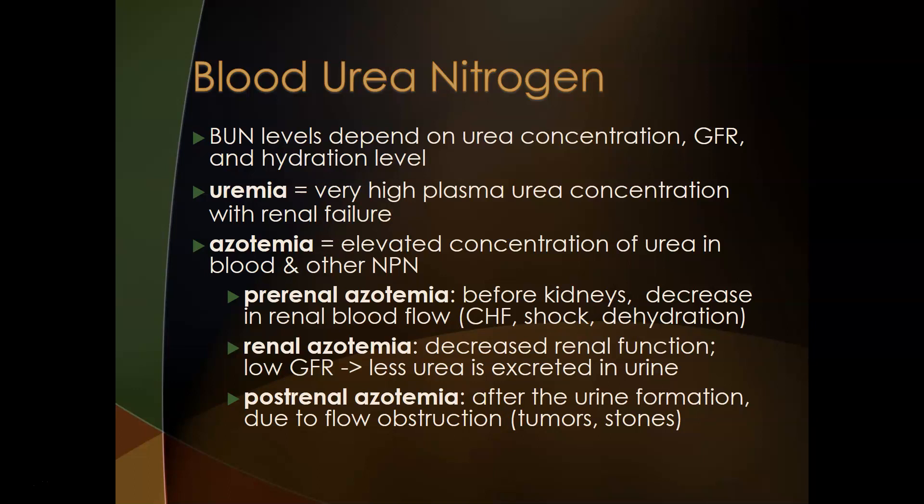There are several types of azotemia: pre-renal, renal, and post-renal, each due to different pathology. Pre-renal — 'before the kidneys' — means the problem is before the kidneys, usually due to decreased renal blood flow. Conditions causing this include congestive heart failure, shock (such as massive blood loss), and dehydration.